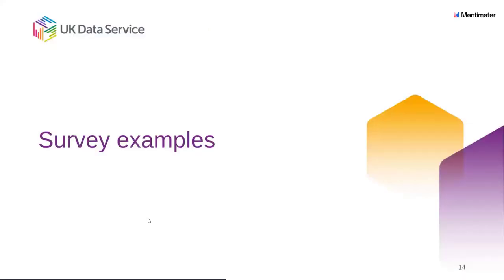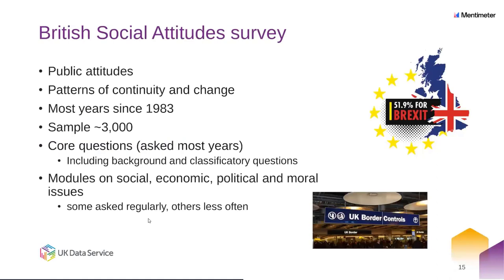Here are some examples of surveys. The British Social Attitudes Survey is conducted almost every year since 1983. It covers public attitudes on a range of issues, and because it's been so long running, it helps to look at patterns of continuity and change. The sample is around 3,000. There's a set of core questions identifying things like background, age, sex, ethnicity, et cetera, and then a number of modules on different aspects — some asked regularly, others less often. Often led by media interests: in the 2010s you'll see a focus on immigration, Brexit, et cetera. Future editions will likely look at cost of living and precarity, and previous editions covered COVID.